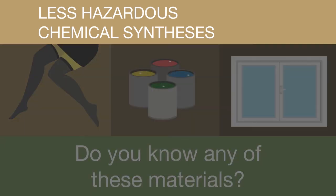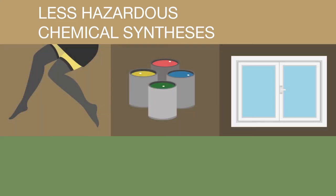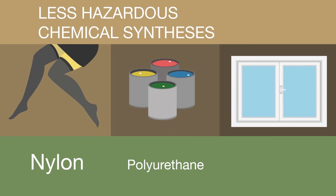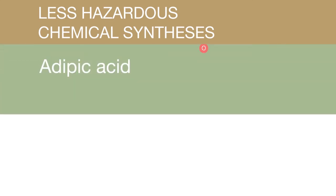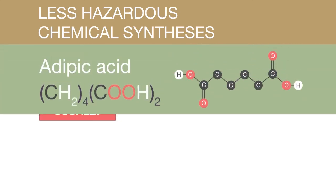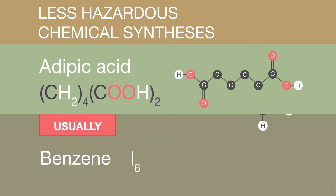If you said nylon for tights, you'd be right. If you said polyurethane, you'd be right for paints and coatings. Finally, plastic window frames are made of PVC — these contain a plasticizer allowing the frames to be easily molded. All of these materials require adipic acid in their production.